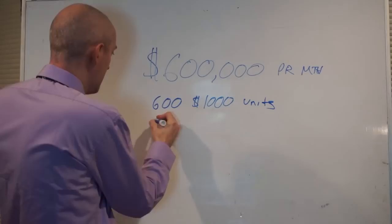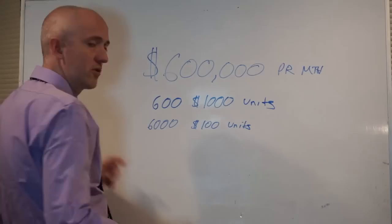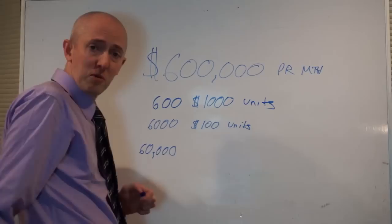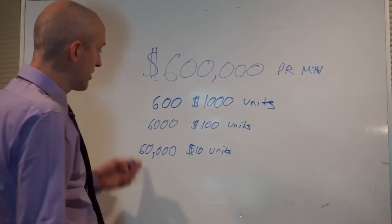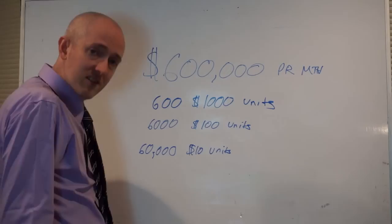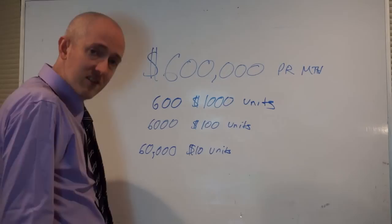I explained that this amount of money every month would have to be six hundred thousand dollar units, six thousand one hundred dollar units—I do that all the time. And then you could make things really affordable for your audience and you could make your product ten dollars, but then you would have to do sixty thousand of those units a month.